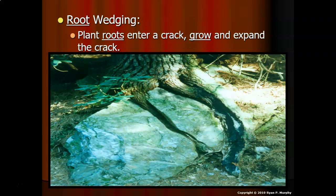Our next form of mechanical weathering is root wedging. Instead of ice or frost wedging, we now have root wedging. This is when plant roots get into cracks in rocks, and as they grow they push the rock apart, causing cracks and breaking it into pieces.